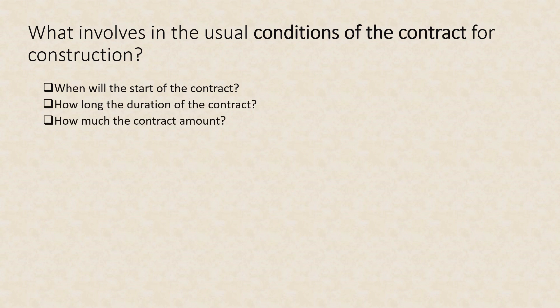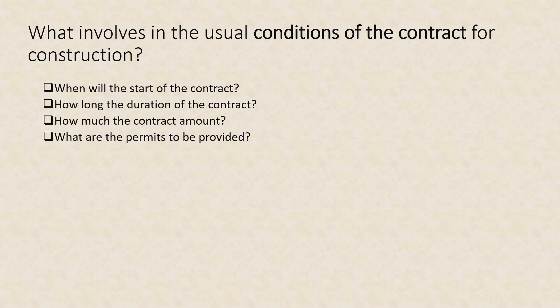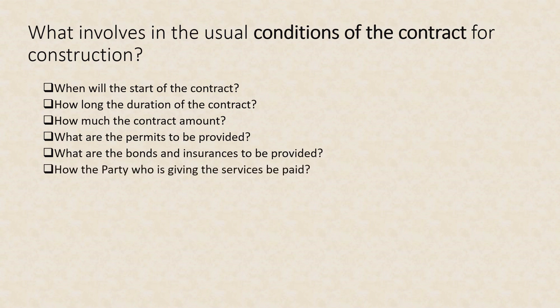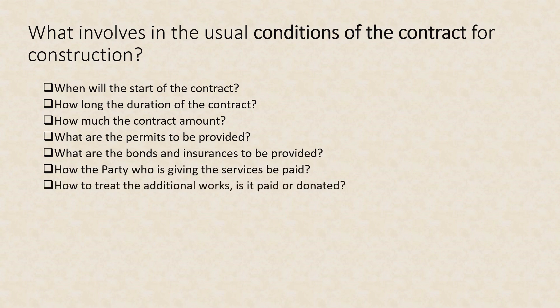How much is the contract amount? This is the cost of the whole works or services. What are the permits to be provided? Does the contractor need to apply for permits prior to and after the project, which shall be provided to the client or employer? What are the bonds and insurances to be provided? Bonds and insurances are important because they protect the interests or rights of both parties. How will the party providing the services be paid — per accomplishment basis, periodically, or depending on the agreement?